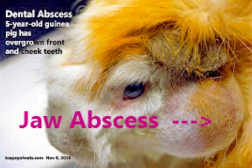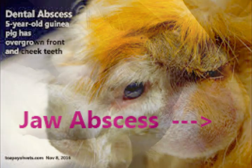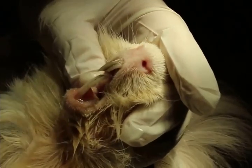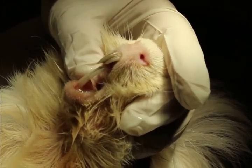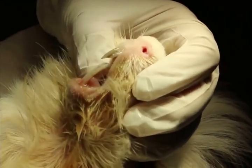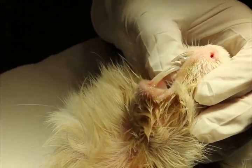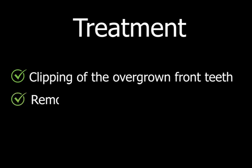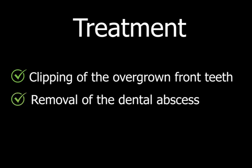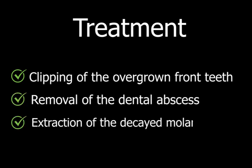If there is a long delay, the guinea pig becomes emaciated, malnourished, dehydrated, and may die. Treatment involves three steps: clipping of the overgrown front teeth, removal of the dental abscess, and extraction of the decayed molar tooth.